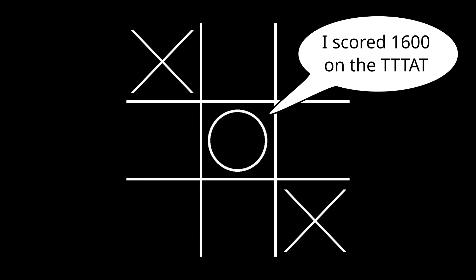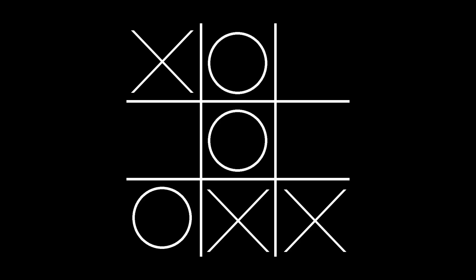If O is a perfect player, they will avoid the trap and a draw is essentially guaranteed. So the expected value of the position is 0.